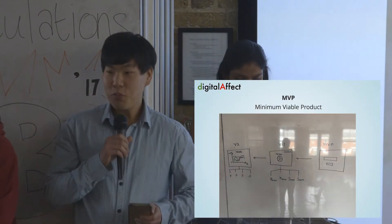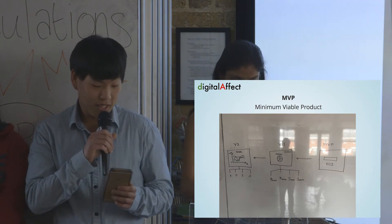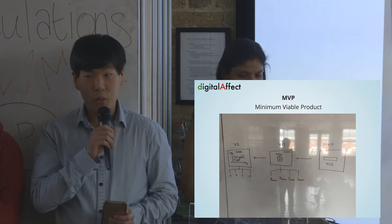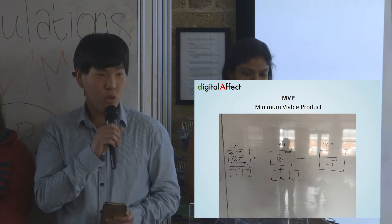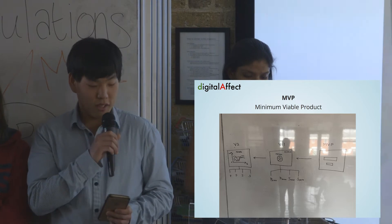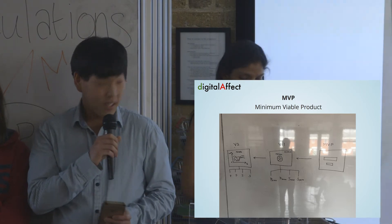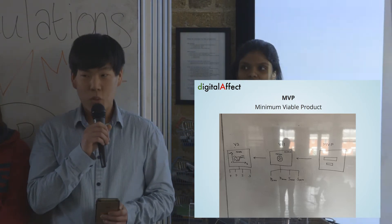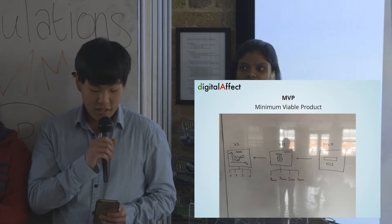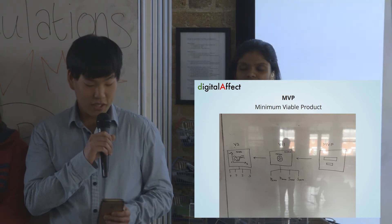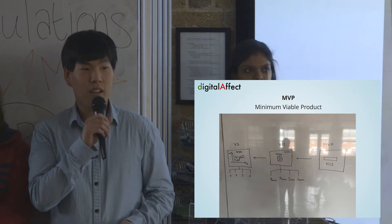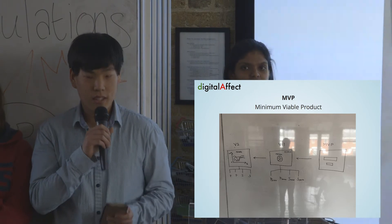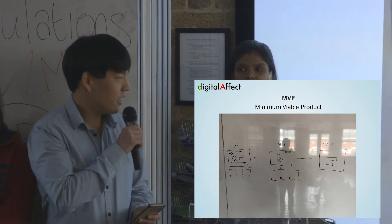As a group, we spent a long time getting the correct specifications for the app. Without them, we wouldn't know where to begin, nor know what features to implement. We discussed as a group to see what everyone's vision was for the app. This led us to a list of specifications, and we narrowed down our minimum viable product from there.